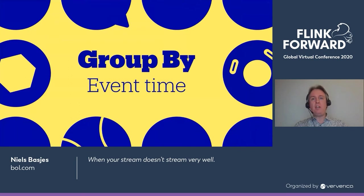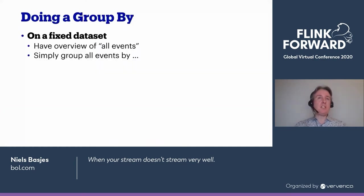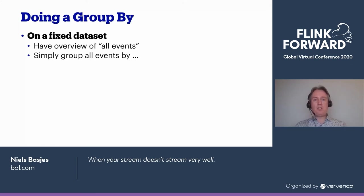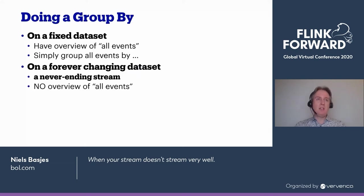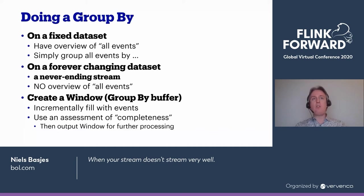A group by in a fixed data set — in a batch operation — is very easy because you have an overview of all events that will ever be in the batch. But this is a stream, which is essentially a forever-changing, never-ending dataset. You will never have an overview of all events. So in streaming systems there is a different concept called a window, which is essentially a group-by buffer. This buffer fills incrementally with events, and then there is some kind of assessment of completeness. When that arrives, you say: my buffer is now full, I can continue processing with this set of events.